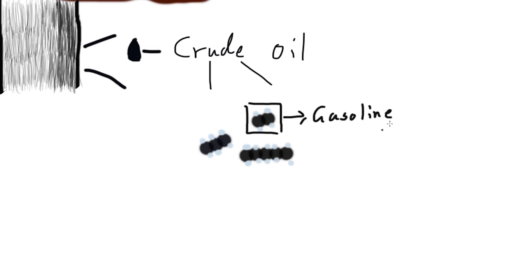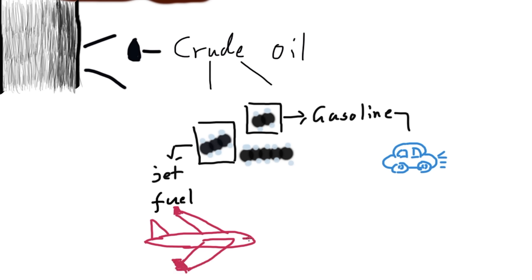For example, we have gasoline, which usually have a short chain of carbons. This powers the cars that we drive. And then we have jet fuel, which have a slightly longer chain of carbons, and this powers the aircraft that we fly with.